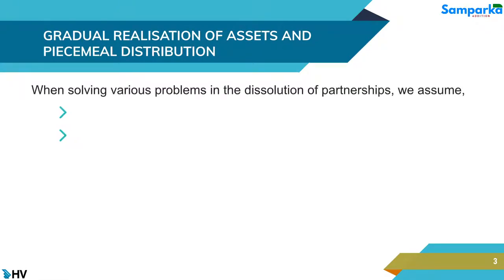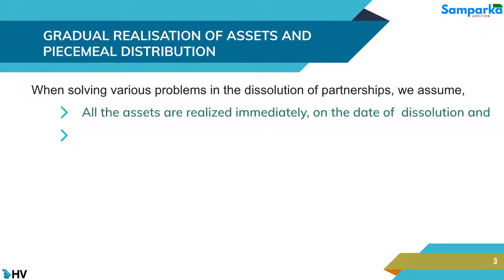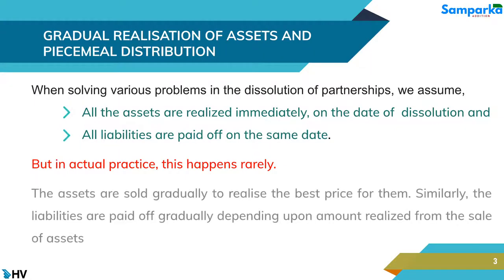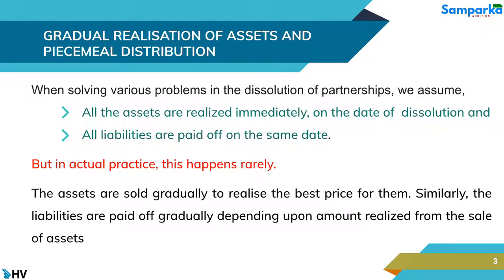When solving various problems in the dissolution of partnerships, we assume all the assets are realized immediately on the date of dissolution and all liabilities are paid off on the same date. But in actual practice, this happens rarely. The assets are sold gradually to realize the best price for them. Similarly, the liabilities are paid off gradually depending upon the amount realized from the sale of assets.